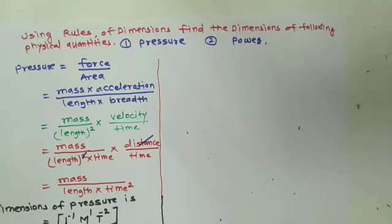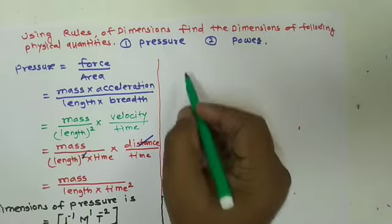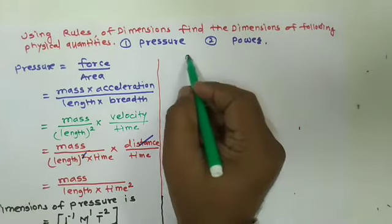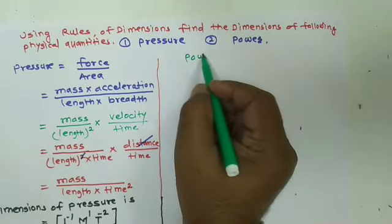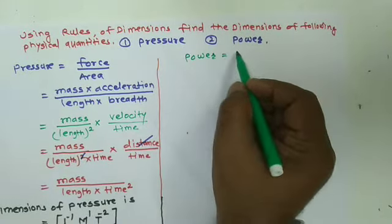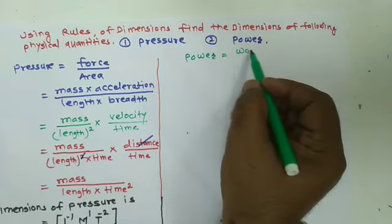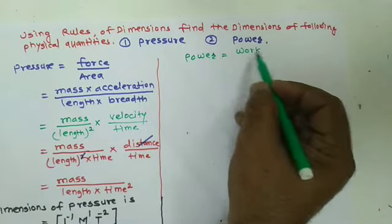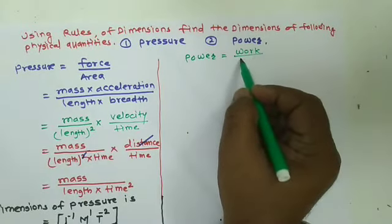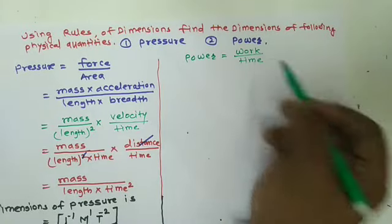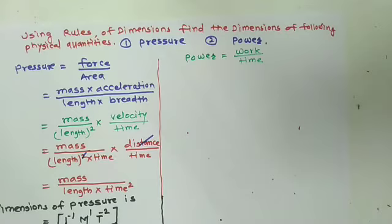Similarly, we can solve dimensions for power. Power is the rate of doing work, meaning work divided by time. That is the dimensional formula for power. We know that time is a fundamental unit, so we can write work as force multiplied by distance.